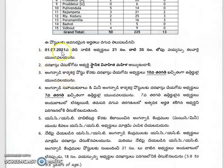The age limit is about 25 to 30 years. That is, as of July 1st 2021, the age limit is 21 to 35 years.